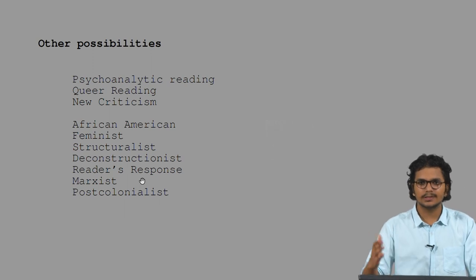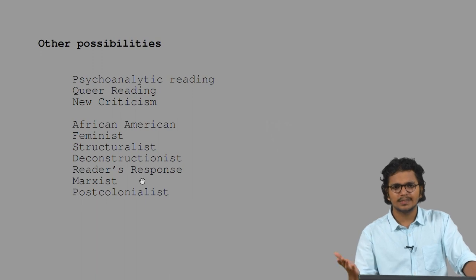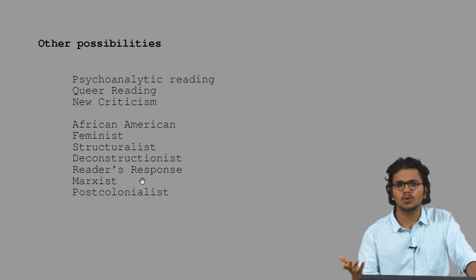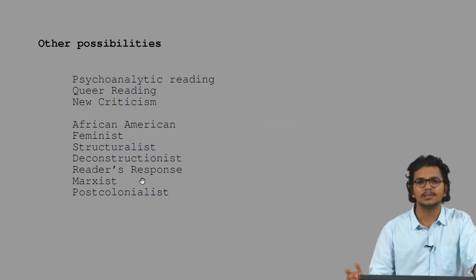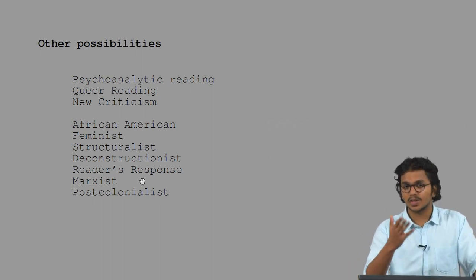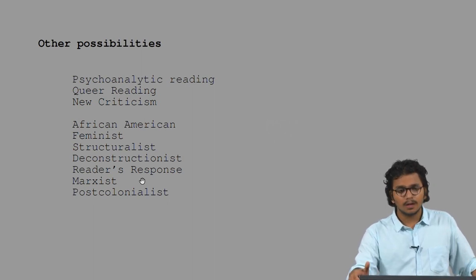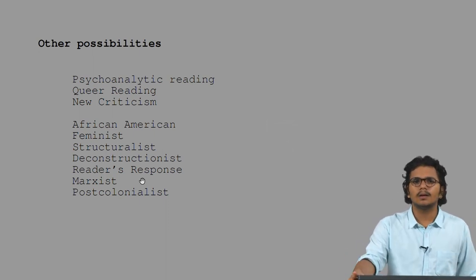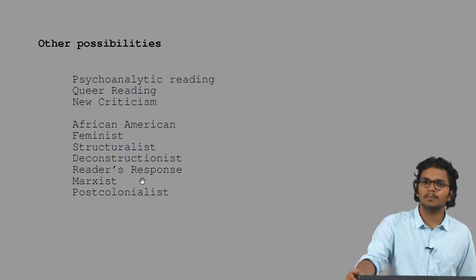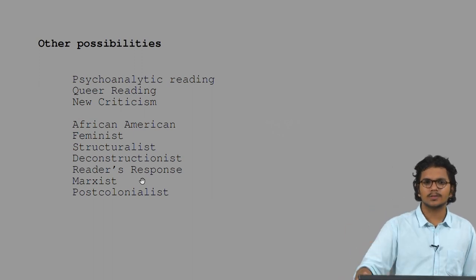We also have psychoanalytic readings which treat this as a story of dysfunctional love, as a story of a girl wanting a relationship which does not have any intimacy — a fear of intimacy. There is a queer reading which tries to read Nick Carraway and Jordan Baker as gay people by reading into how their behaviour is. And there is a new criticist reading which deals only with the text and so on and so forth.